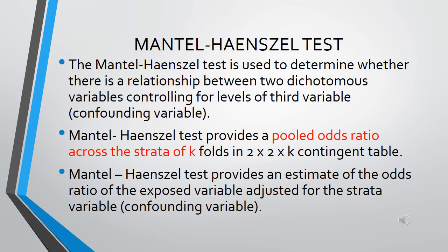What is the Mantel-Haenszel Test? The Mantel-Haenszel Test is used to determine whether there is a relationship between two dichotomous variables, controlling for the level of a third variable. That third variable is also defined as a confounding variable. The Mantel-Haenszel Test provides a pooled odds ratio across the strata of K folds in a 2×2×K contingency table, and provides an estimation of the odds ratio of the exposed variable adjusted to the strata. The strata variable is the confounding variable.